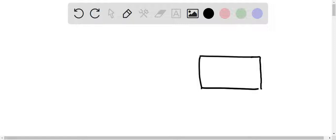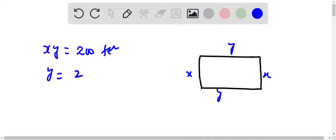This is X, this is Y, this is X, this is Y. The fence encloses a rectangular area, so X into Y is 200 square feet. So Y will be equal to 200 by X, equation number one.